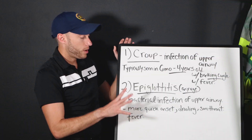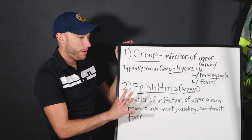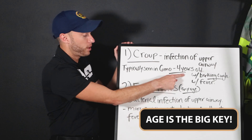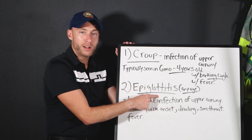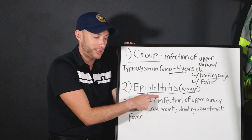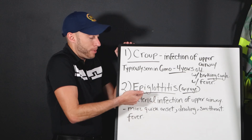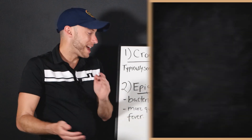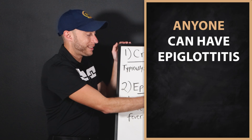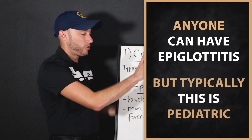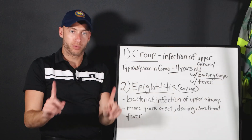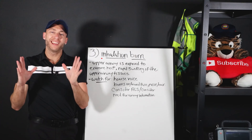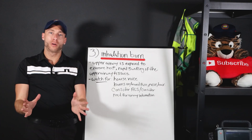The big key to remember is the age component. Croup: six months to four years. Even an adult can have epiglottitis, because all it means is your epiglottis is inflamed — anyone can have that — but typically this is pediatric. Number three is inhalation burns.